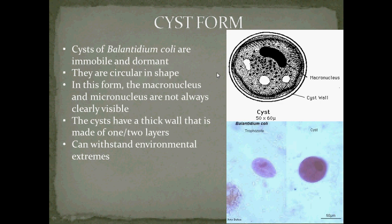Cysts of Balantidium coli are immobile and dormant. They are circular in shape, and in this form the macronucleus and micronucleus are not always clearly visible, but more often than not one can clearly distinguish the macronucleus under microscopic view. The cysts have a thick wall, which is made up of one or two layers, and they can withstand environmental extremes.